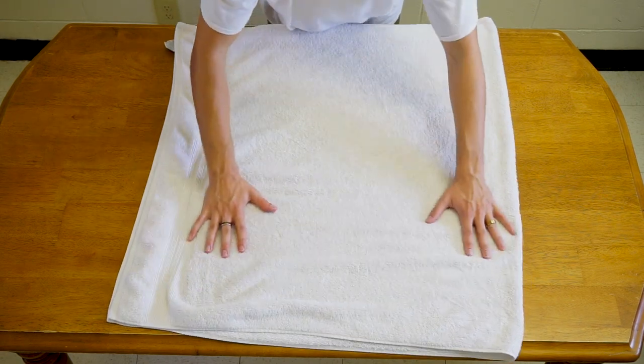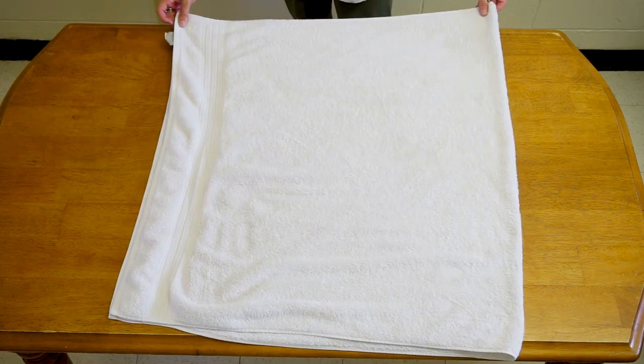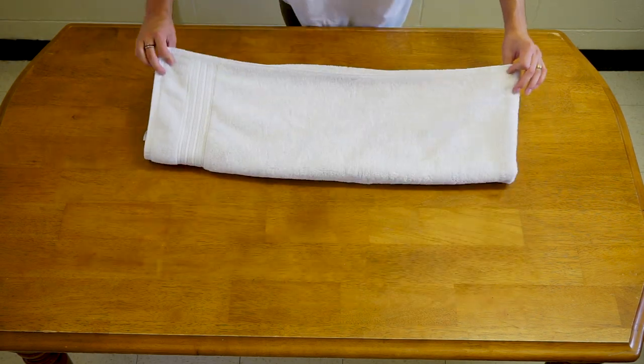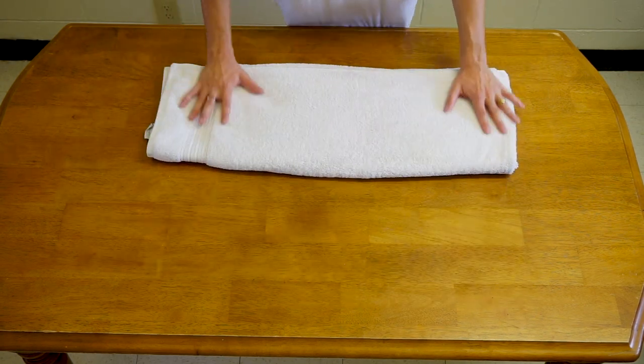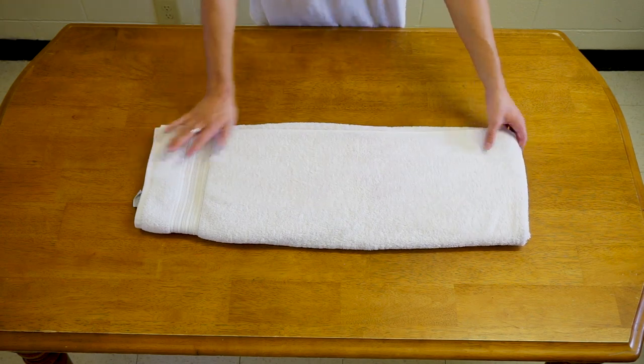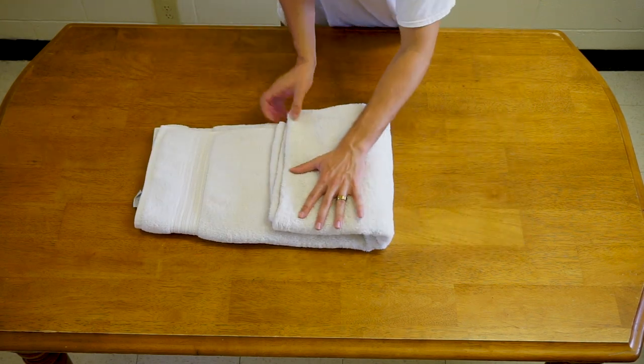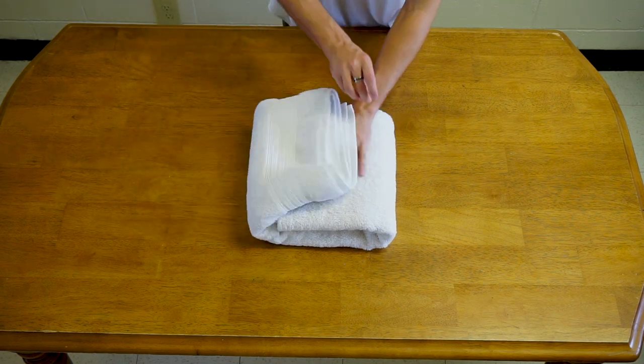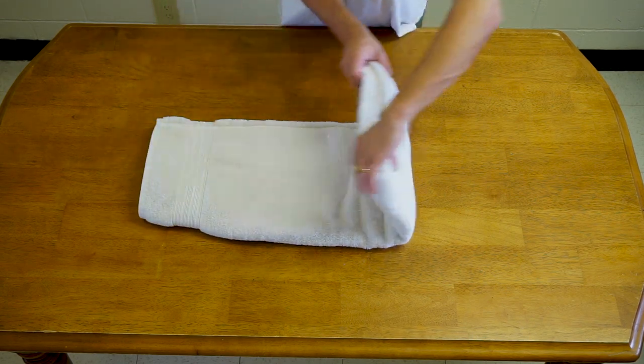Fold it into thirds just like so, and then I like to fold from this end, not the design end, so that the design shows up at the top. Again, I'm just going to tuck my tag right there. You may have to adjust it a few times just to make sure it folds nicely and your edges meet the way you want it to.